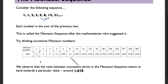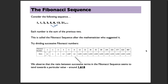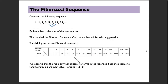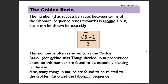We observed that the ratio between successive terms in the Fibonacci sequence seems to tend towards a particular value of around 1.618. That was the Fibonacci sequence — pause the video if you need to take notes from the screen.